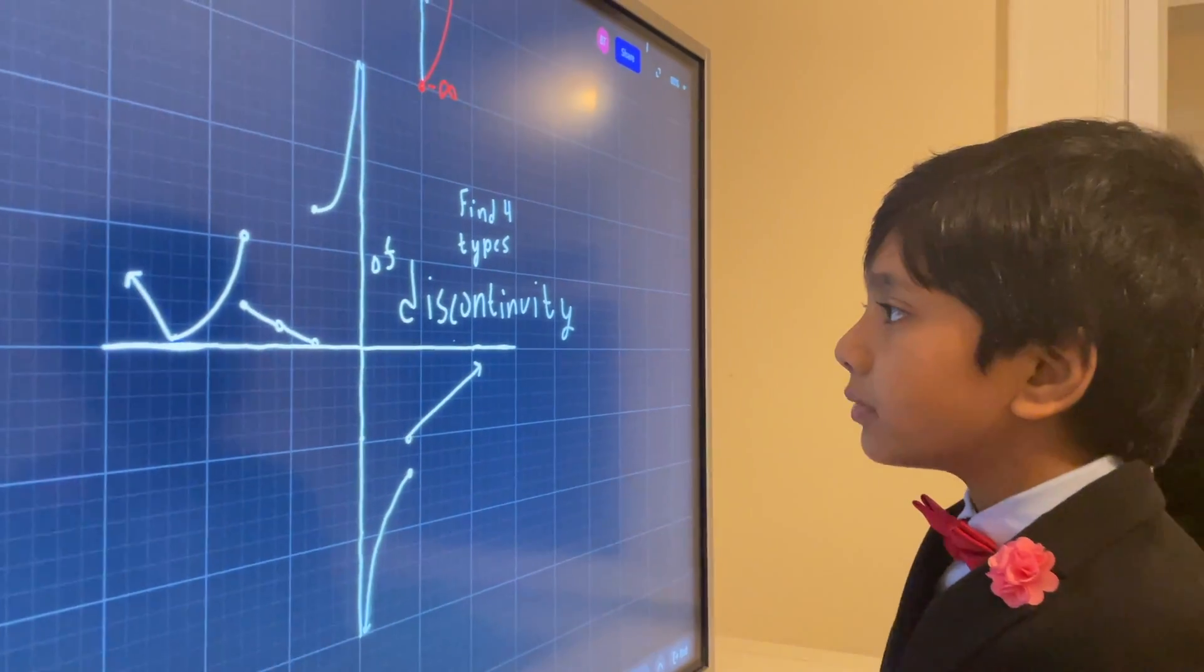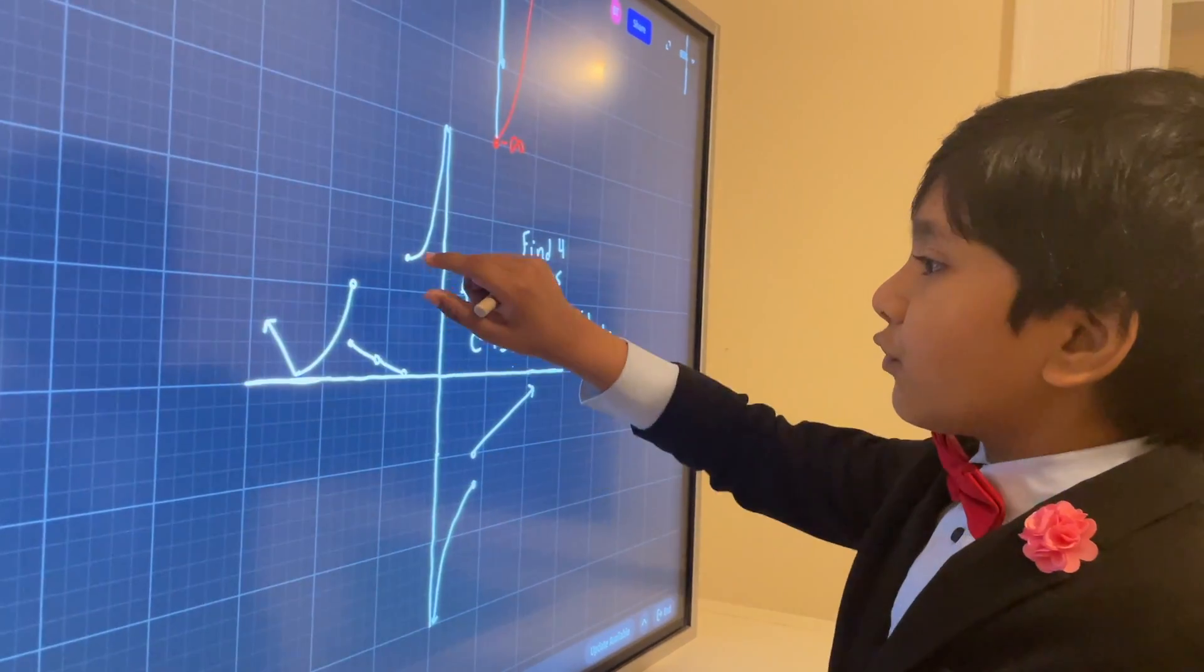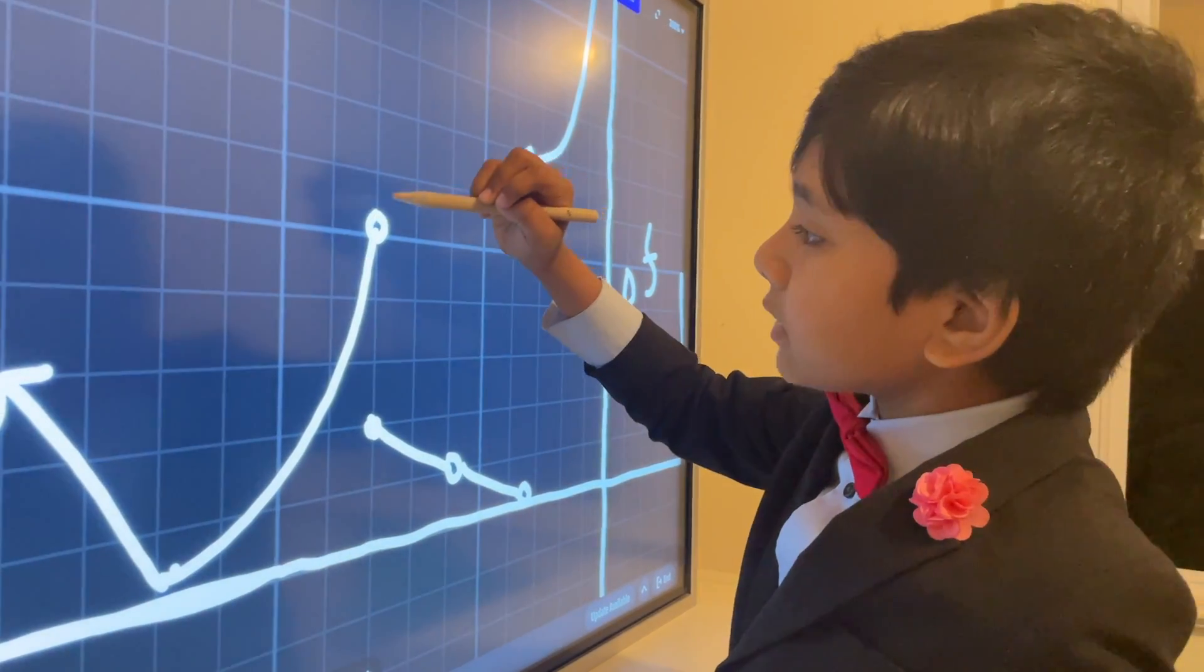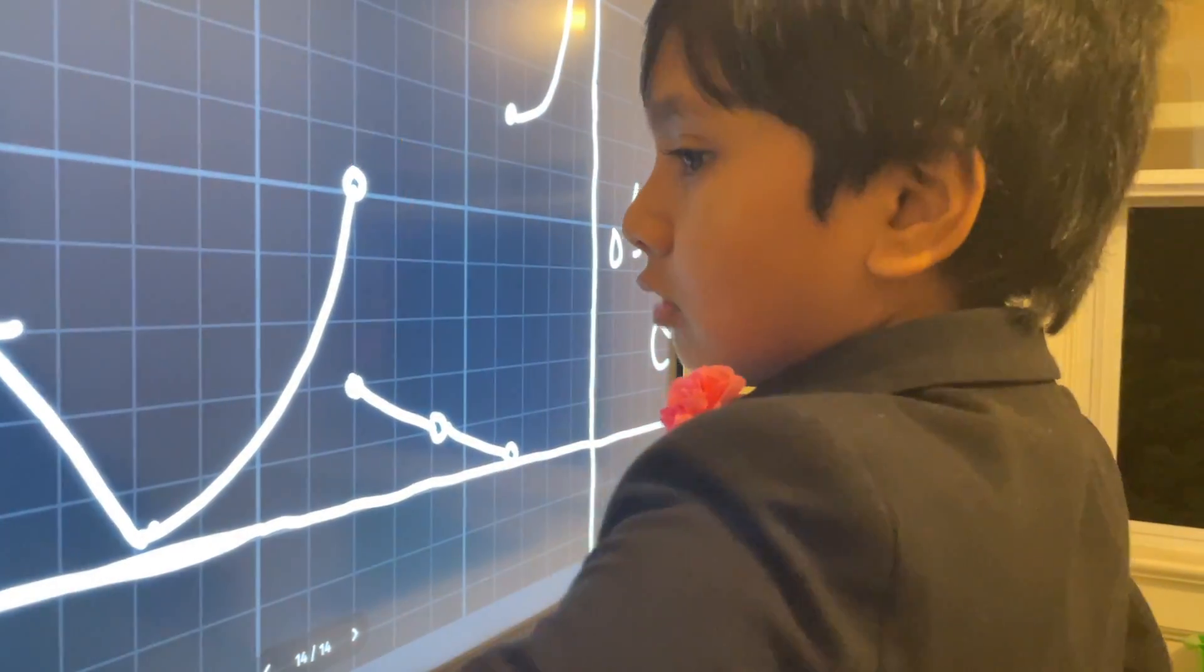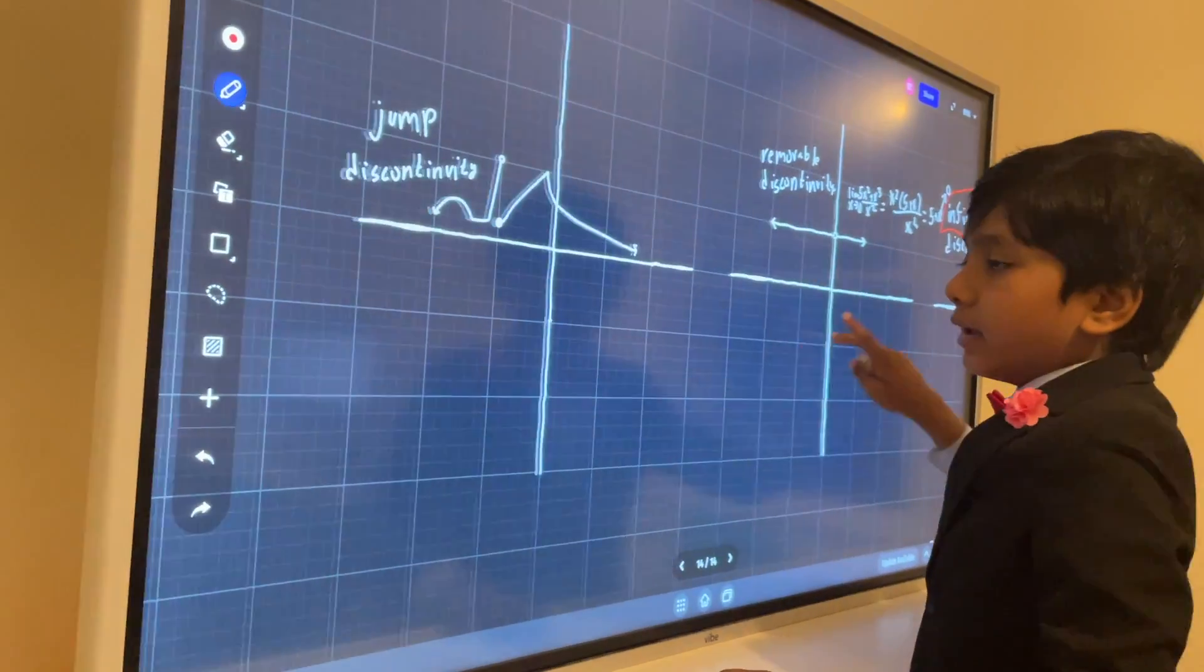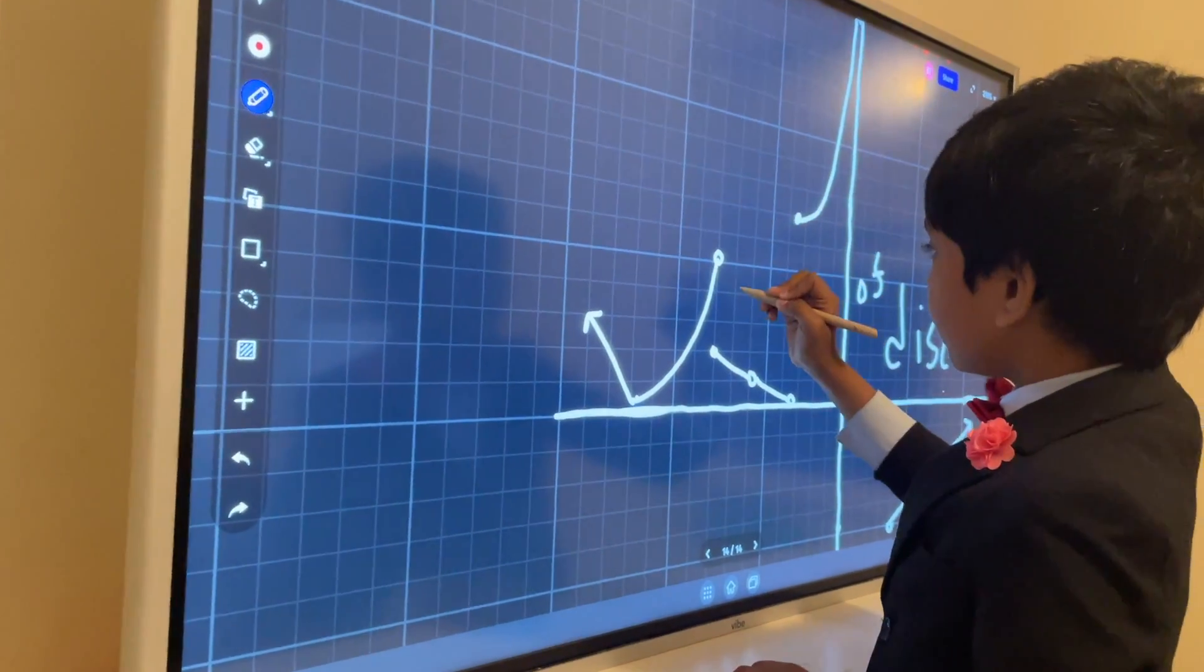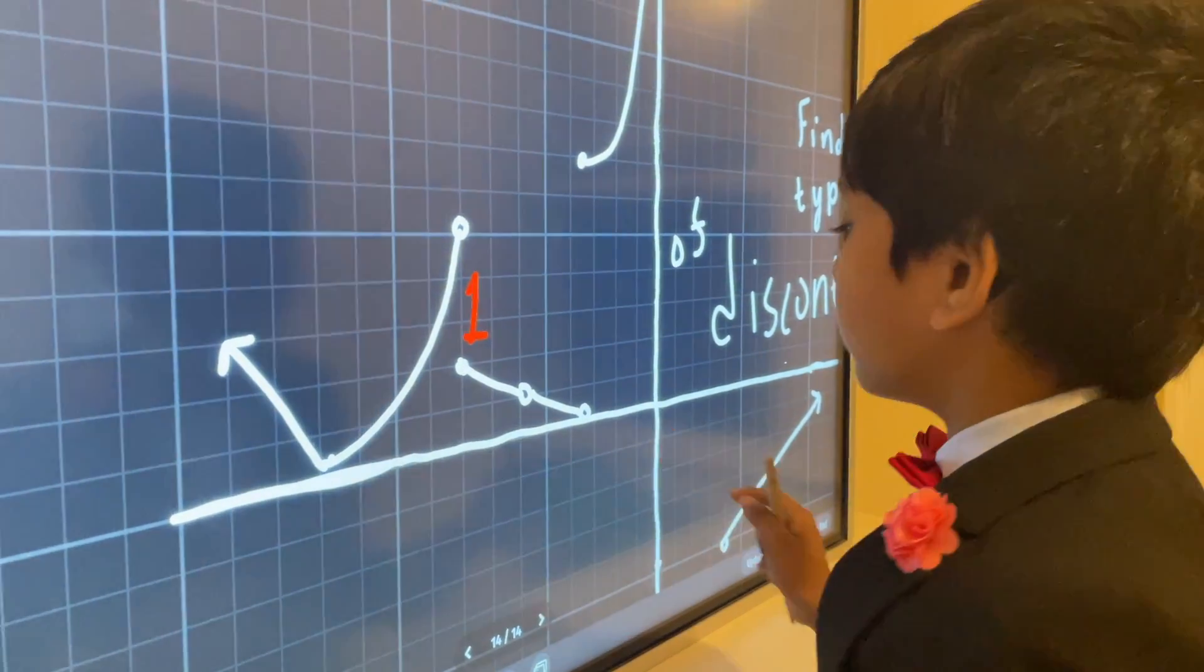So the four types of discontinuities, right? Well, first let's see what we can spot. So there's a discontinuity here. It seems like we have to jump from here to here. So that's our first type of discontinuity, the jump discontinuity. So this is one for the first type of discontinuity.